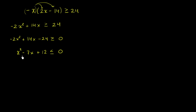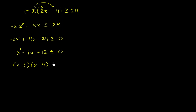Now let's see if we can factor this quadratic expression. We need two numbers whose product is positive 12 and whose sum is negative 7. Since the product is positive they have the same sign, and since the sum is negative 7 they're both negative. Negative 3 and negative 4 fit — their product is positive 12 and their sum is negative 7. So we can write this as x minus 3 times x minus 4 is less than or equal to 0.